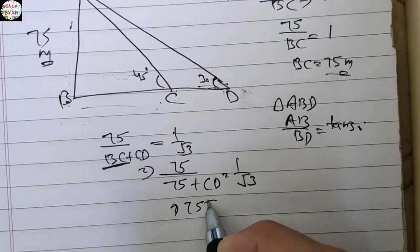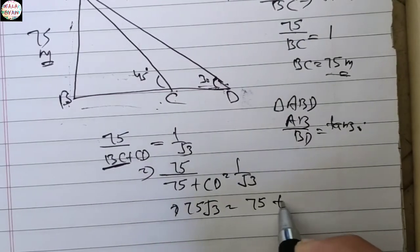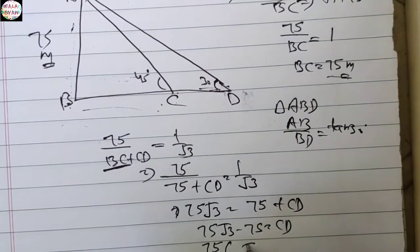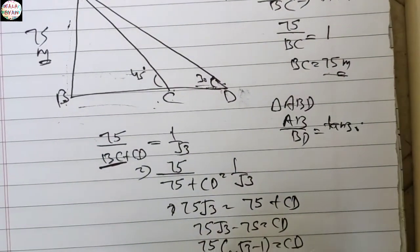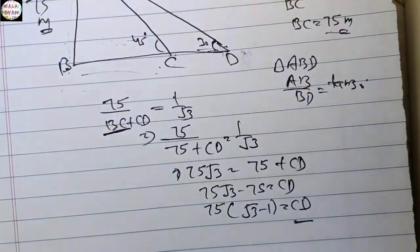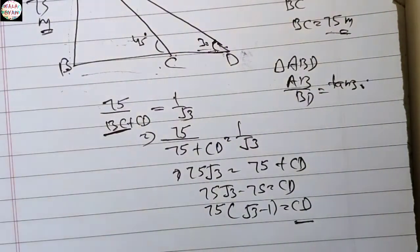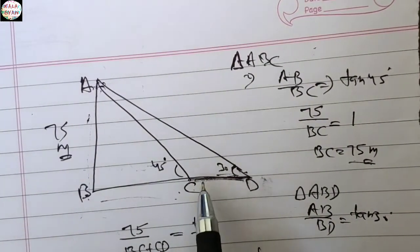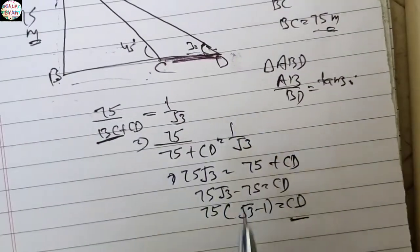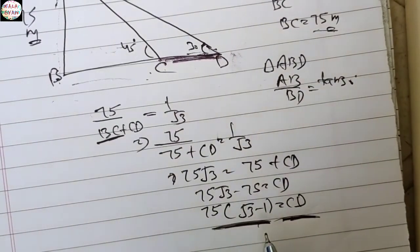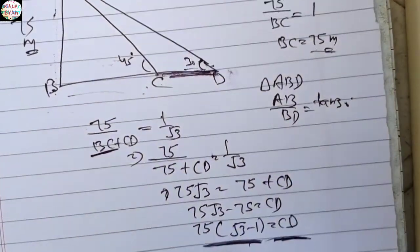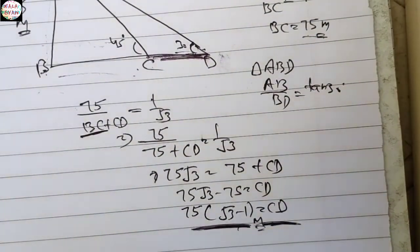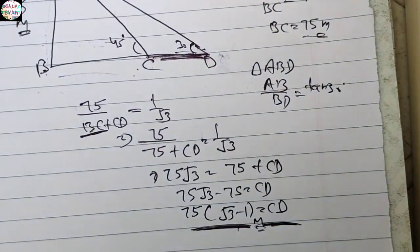इसको solve करते हैं: 75√3 × 75 = 75 + CD। इससे 75√3 − 75 = CD, यानी CD = 75(√3 − 1)। हमने CD find out कर लिया — इन दो ships के बीच का distance CD = 75(√3 − 1) meter। यह था sum — easily हमने solve कर लिया। Thank you so much for watching this video, keep watching, keep learning!